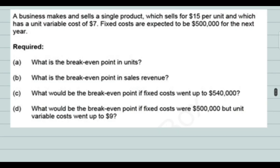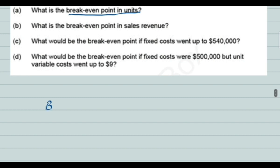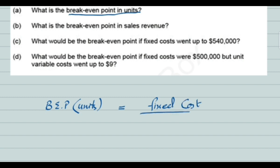Consider an example: A business makes and sells a single product which sells for $15 per unit and has a unit variable cost of $7. Fixed costs are expected to be $500,000 for the next year. The first requirement is to calculate the break-even point in units. To do so, we apply the formula: break-even point in units equals fixed cost divided by contribution per unit.